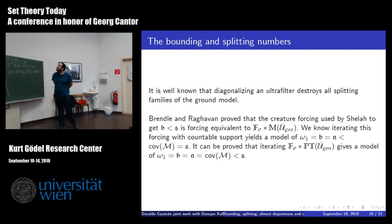So now, bounding and splitting. So, Brendle and Raghavan proved that the original forcing used by Shelah to build the model of b less than s, it is forcing equivalent to first doing F-sigma and then doing Mathias of the generic ultrafilter. So, if you iterate this, you get omega_1 equal b equal covering meager, but the Mathias adds Cohen reals. So, covering meager goes to the other side. But now, if you do the same, but instead, you first force the ultrafilter, but instead of using Mathias, you use PT, then you get omega_1 equal b equal covering meager less than s. So, you do the same, but without adding Cohen reals.